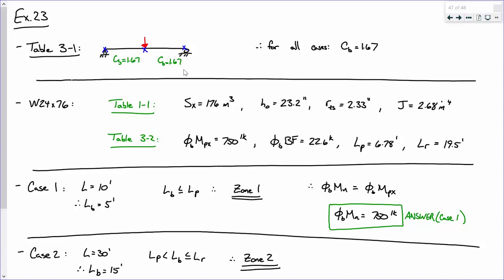In table 3.2, the ZX charts, the ZX tables, I've got the plastic moment, the phi M_P, plastic moment of 750 foot kips. I've got the beam factor, 22.6 kips. Now, that is correct. The units are kips, because you're multiplying that times length to get foot kips. And I've also got my anchor points of 6.78 feet and 19.5 feet.